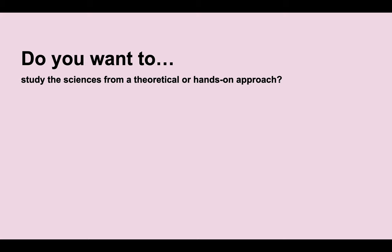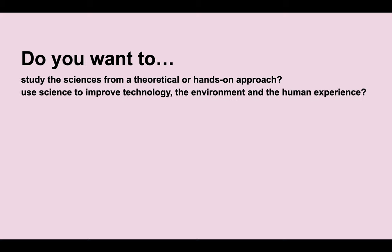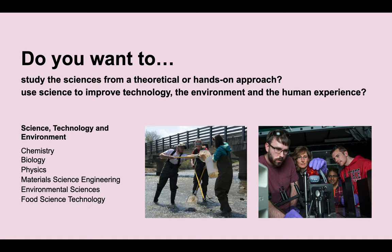Do you want to study the sciences from a theoretical or hands-on approach? Explore how the sciences can be used to improve technology, the environment, and the human experience? Science, technology, and environment is the focus area for students who are interested in majors like chemistry, biology, and physics, as well as majors such as materials science engineering, environmental sciences, and food science technology.